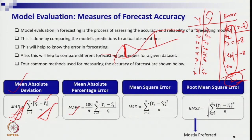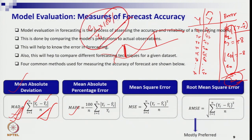Mean Absolute Percentage Error (MAPE) is similar, but we take the absolute value of the error, divide by the actual data — giving the relative error — and multiply by 100. So for each period: |error| / actual × 100 gives the percentage error. If you then take the average of those percentage errors, you get the Mean Absolute Percentage Error.